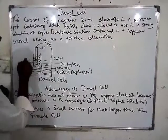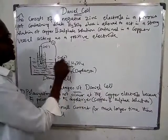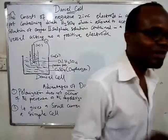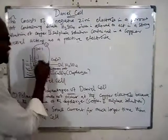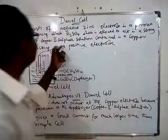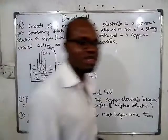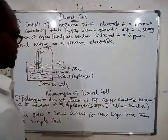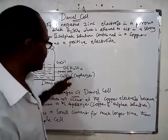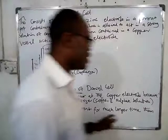The copper(II) sulfate solution is contained in a copper vessel — you can see it here. This copper vessel acts as the positive electrode. You know that on the copper electrode there is always polarization occurring, which is one of the defects of the simple cell. But because we are using copper sulfate as a depolarizer, there will be no polarization effect in the Daniel cell. Therefore, advantage number one: polarization does not occur in the Daniel cell, because of the presence of the depolarizer, copper(II) sulfate solution.